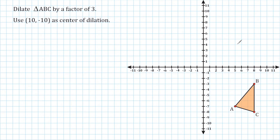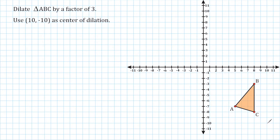So it's asking us to dilate triangle ABC, which is right here on the coordinate plane, using positive 10, negative 10 as a center of dilation. So the first thing that we should do is locate the center of dilation on the coordinate plane. So we're going to go to positive 10, negative 10, and we're going to make a point right here.